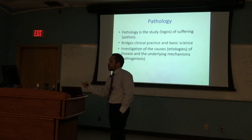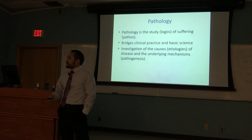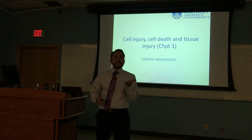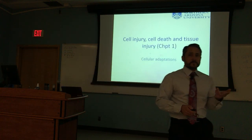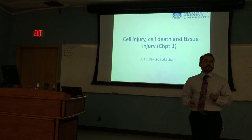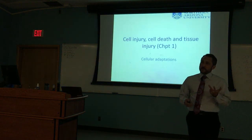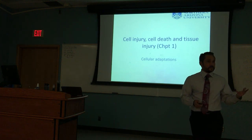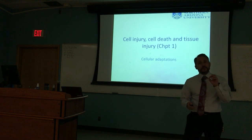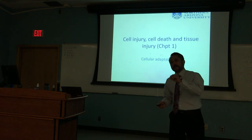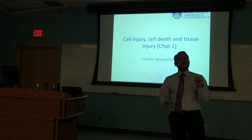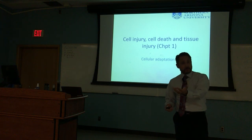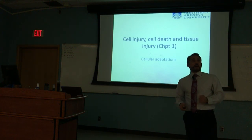Pathology investigates the causes — what we call etiologies — of diseases and the underlying mechanisms, or pathogenesis. We've already looked at two examples: Barrett esophagus from the last lecture, and a duodenum or stomach ulcer. We can now appreciate that something traumatic was happening to those cells — they were undergoing damage as a result of hydrochloric acid. So, stay away from hydrochloric acid.